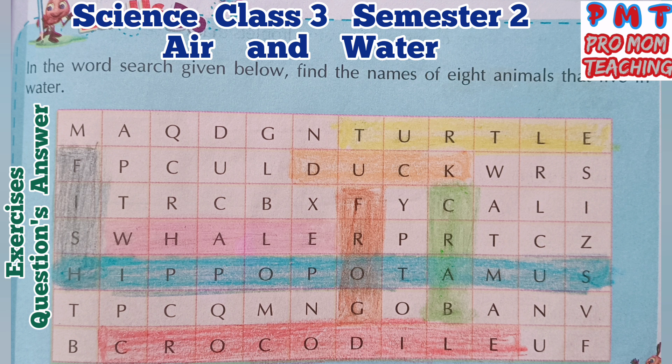In the word search given below, find the names of eight animals that live in water. In horizontal, you will find: turtle, duck, whale, hippopotamus, and crocodile.